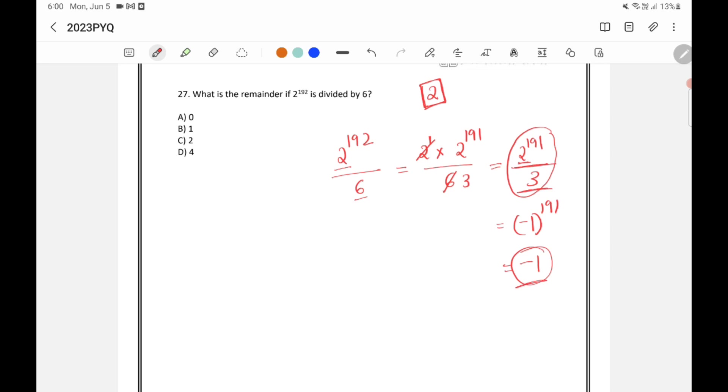So minus 1 is the negative remainder. So we need to convert it into a positive remainder. So we have to take this minus 1 and subtract it from 3. So 3 minus 1 is 2. So 2 is the remainder when 2 raised to 191 is divided by 3.